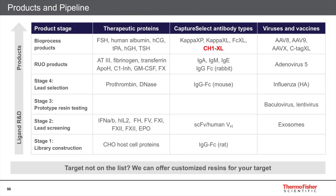We are developing affinity solutions for three main areas: proteins, antibodies and antibody-related targets, and viruses and vaccines. Products in the top two rows are all readily available off the shelf. The research use only (RUO) products have not yet been upgraded to cGMP grade due to lack of demand until now. However, if you find one of these resins suitable for your application, we can upgrade them to bioprocess grade — but we would need your commitment and support for these activities.